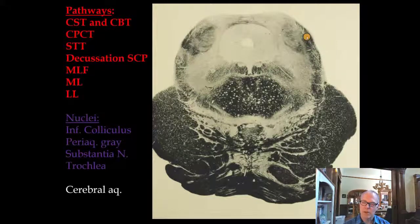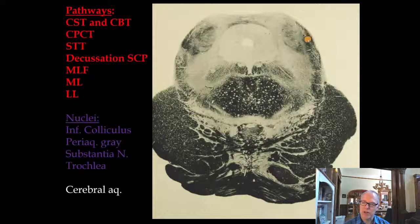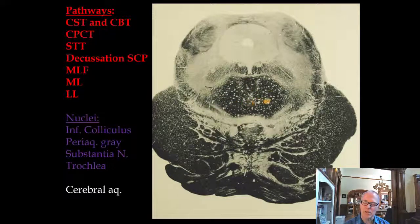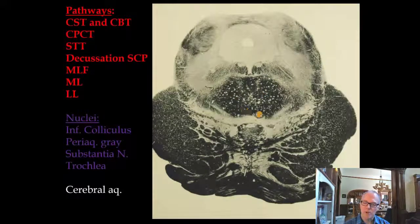The lateral lemniscus contains auditory information and synapses on the inferior colliculus. Remember that the superior olivary nucleus handles sound localization, and then auditory fibers cross back and forth and ascend in the lateral lemniscus, finally synapsing at the inferior colliculus. In the center of the midbrain, just below the red nucleus, is the decussation of the superior cerebellar peduncle. The superior cerebellar peduncle contains mainly efferent information going from the cerebellum to the motor cortex, and the right and left cerebellar hemispheres cross here in the middle of the midbrain.